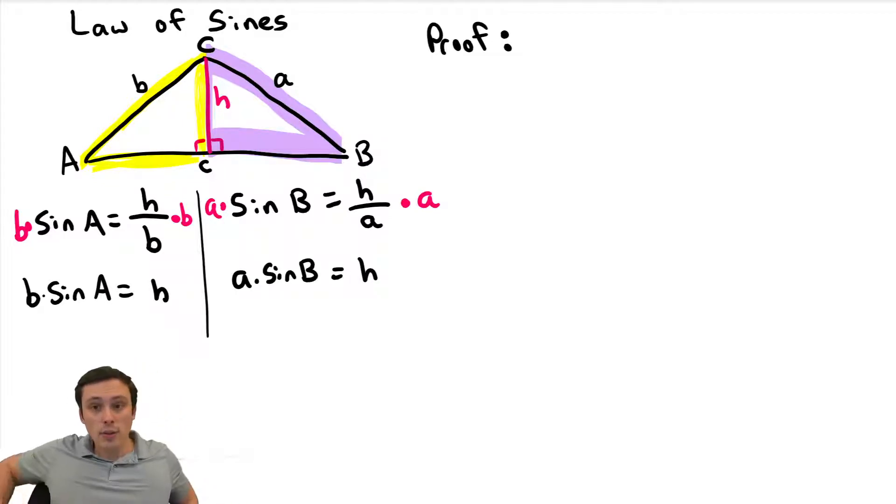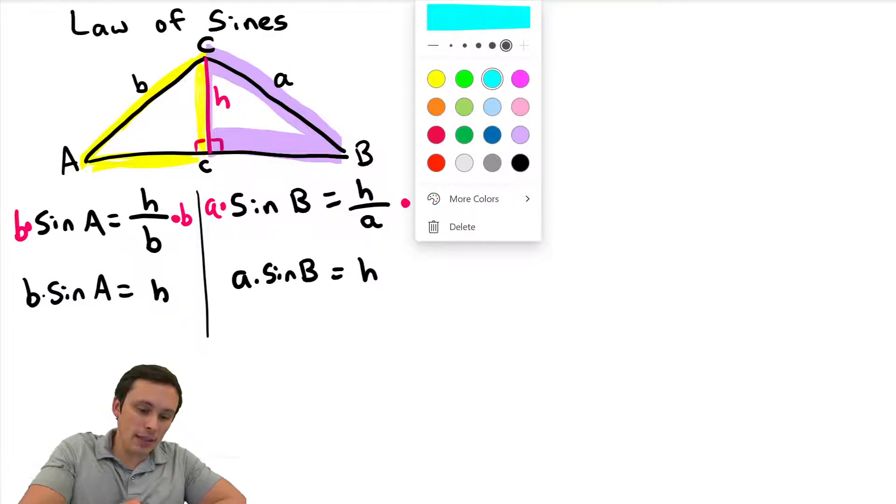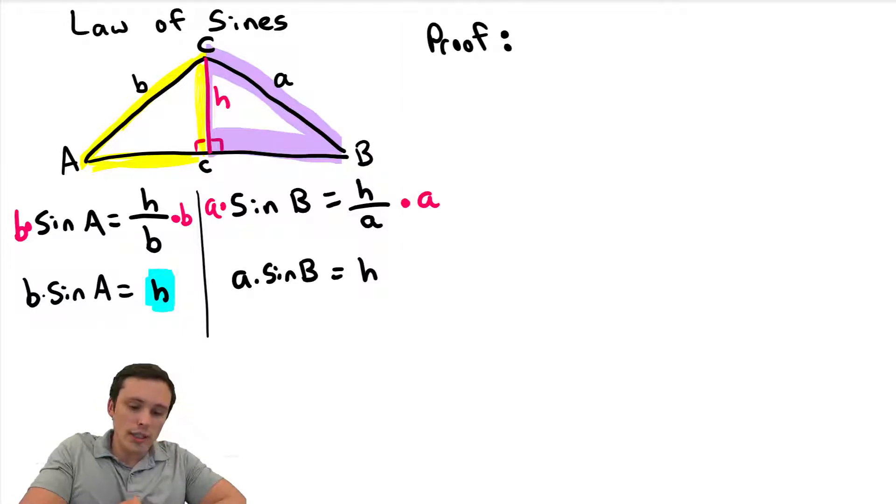Okay, so what do we have here? We have the height of this triangle represented two different ways, right? We have the height represented two different ways. Now, what can we actually do with that? Is that useful for anything? Let me highlight this. H, right? H is the same thing on both of these. And it's also the same thing as this, and it's the same thing as this. These are all the same thing. They're all equal, which means that these two things are equal. Those two things are equal to each other.